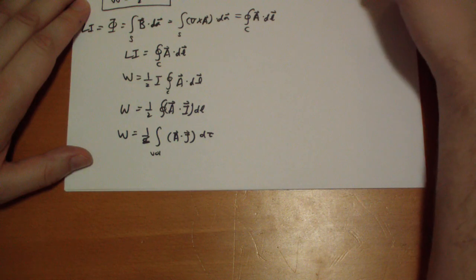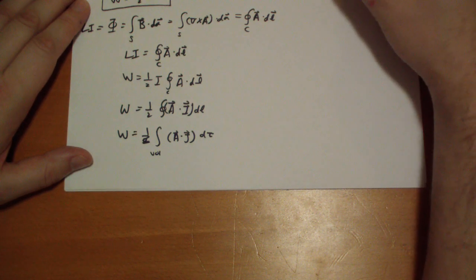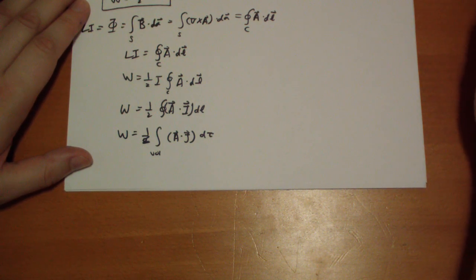So, one-half the volume integral. Let's bring up the mu naught matter over here. So we get A vector dot the curl of B, which is mu naught J, so we have to bring that mu factor, d tau.